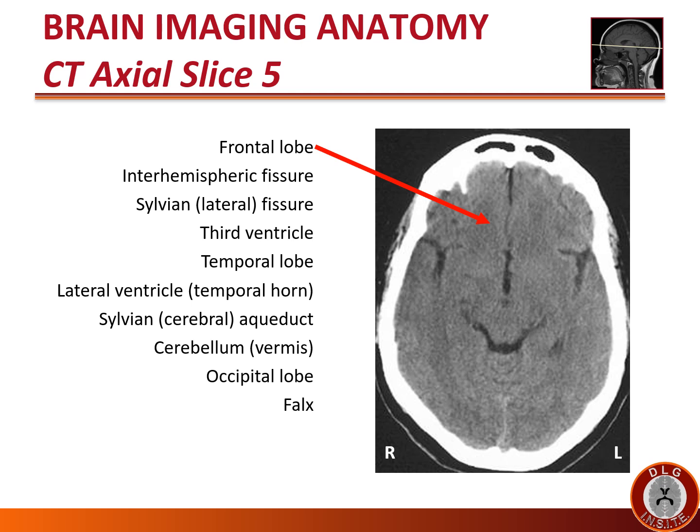Ventrally we continue to see the frontal lobe. In between the frontal lobes, we see the interhemispheric fissure, where the anterior cerebral arteries run. At this level, the sylvian or lateral fissure has a different appearance — it looks more like a T, separating the temporal operculum from the insula and frontal lobe. At this level you might see small round middle cerebral artery branches within the sylvian fissure.